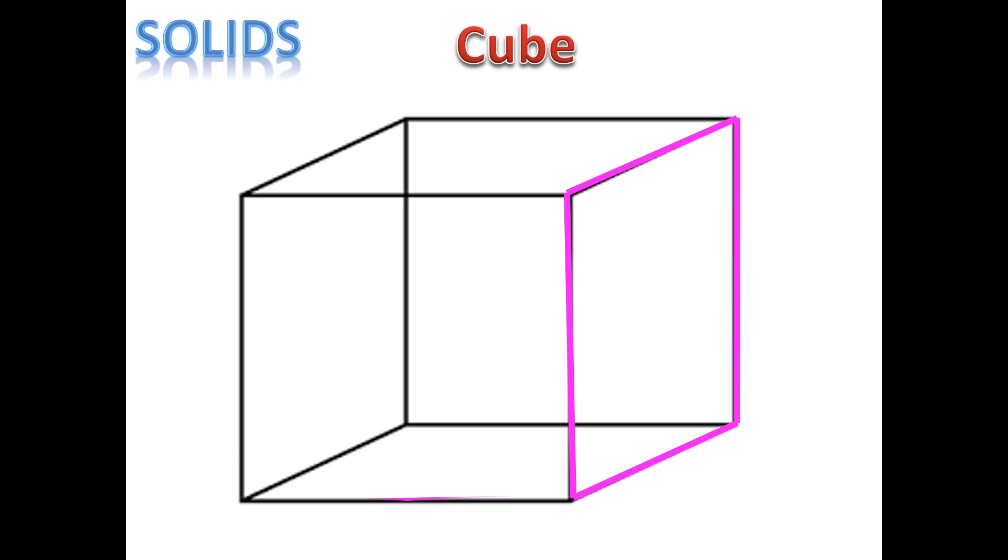1, 2, 3, 4, 5, 6, 7, 8, 9, 10, 11, 12. So there are 12 edges in a cube.